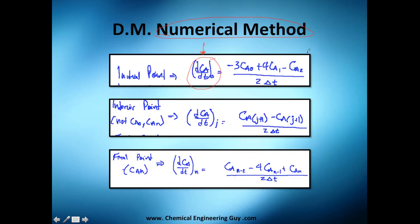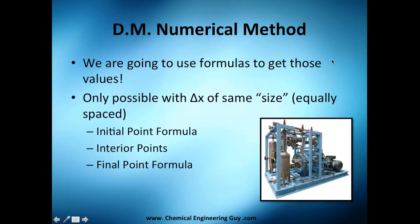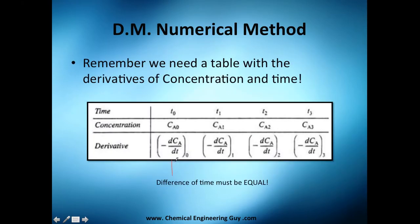What do you need here? It's essentially CA0, CA1, and CA2. You just multiply by these numbers here and divide by two times delta t. That will give you a number and you just put it here.